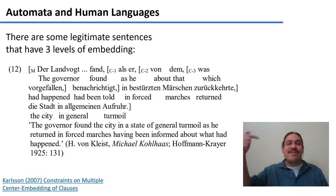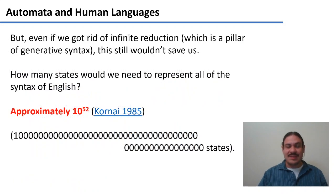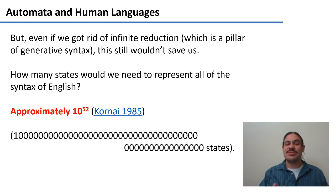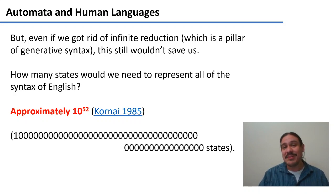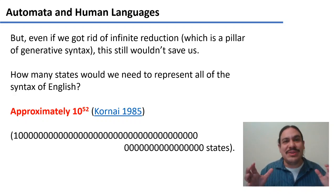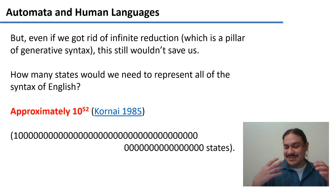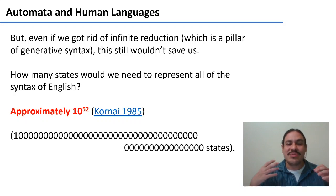So even if we don't have infinite recursion, we have a lot of substructures and a lot of recursion. And even if we got rid of the idea of infinity — which we shouldn't, because it's an important mechanism for how we construct syntax — this still wouldn't save us. The number of states we would need to represent English is approximately 10 to the 52. So it would be practically impossible to build it. Not only would it be impossible, but it would be a fool's errand, because at any point you could make up a new sentence, come up with new words and new ways of saying things, and this would be a new sentence of English that needs to be incorporated. So trying to model English like this is essentially a fool's errand.